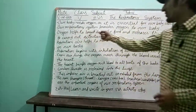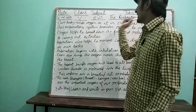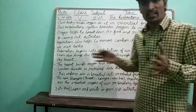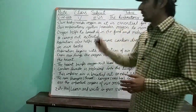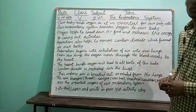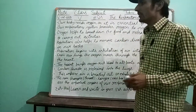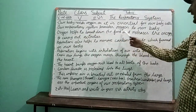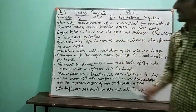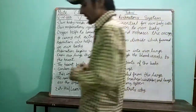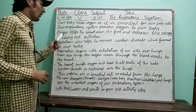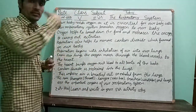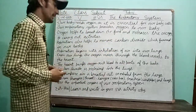Our respiratory system provides oxygen to our body. It is through the respiratory system that we get air inside, and from the air we get oxygen. So the respiratory system is responsible for getting oxygen to our body. Oxygen helps to break down the food and releases the energy to carry out activities — that is the main importance of oxygen.